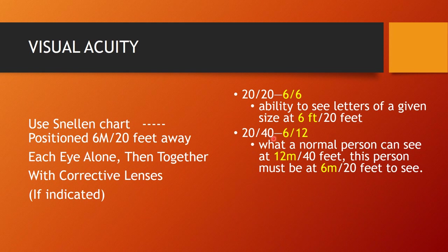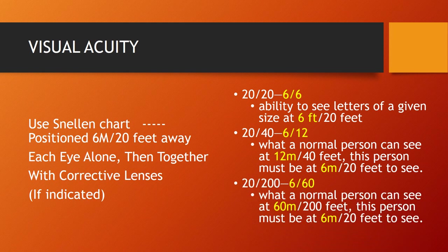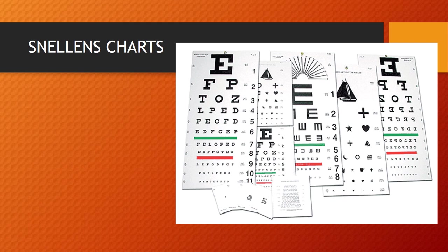6/12 (20/40) means a person must be at 6 meters to see what a normal person sees at 12 meters. 6/60 means a person must be at 6 meters to see what a normal person sees at 60 meters or 200 feet. Visual acuity is documented using different Snellen charts such as E-letter charts, alphabetic charts, and pictograms.